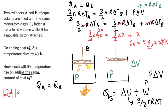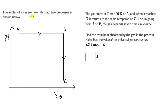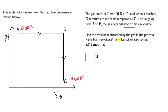Let's look at one more question. We have 5 moles of a gas taken through two processes A to B and B to C as shown in a PV diagram. The gas starts at 400 kelvins at A. When it reaches C, it returns to the same temperature — also 400 kelvins. In going from A to B, the gas expands 7 times in volume. Find the total heat absorbed by the gas.